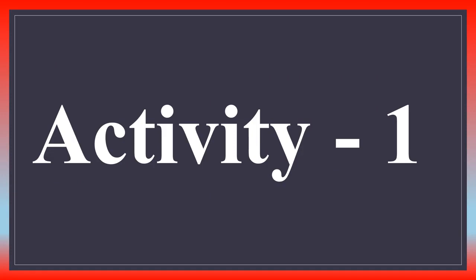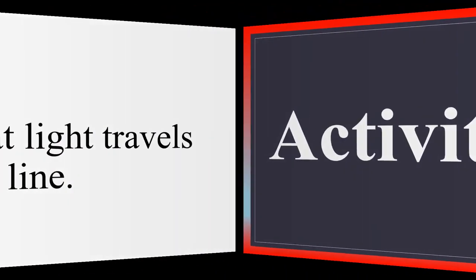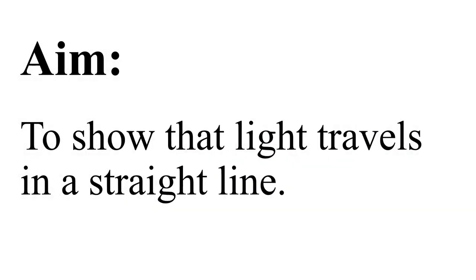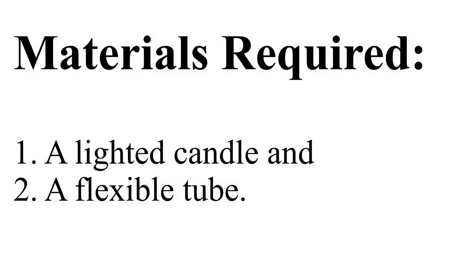Activity one. The aim or objective of an activity means what would be the outcome if we perform this activity. Here the aim of this activity is to show that light travels in a straight line. Materials required: number one, a lighted candle; and number two, a flexible tube.